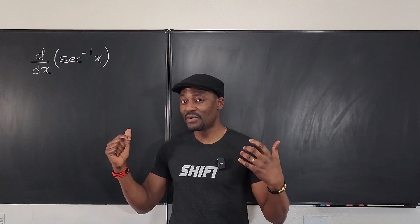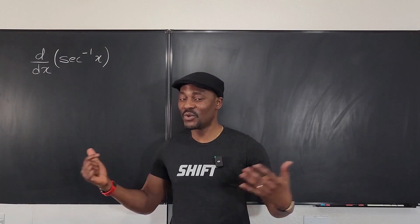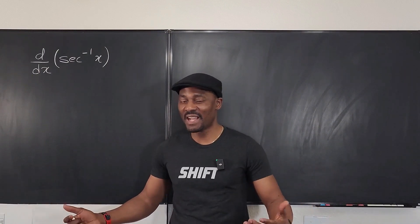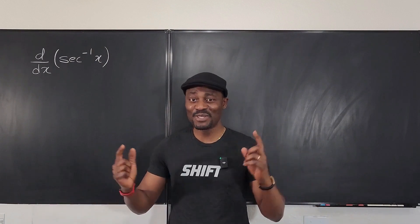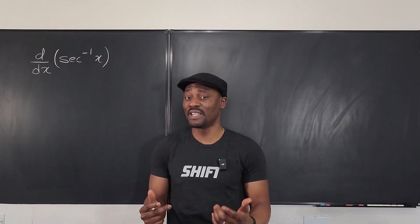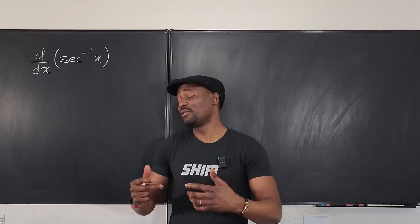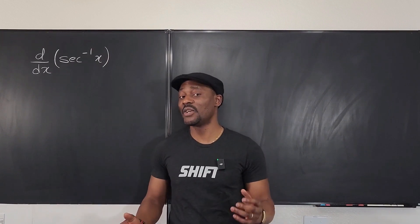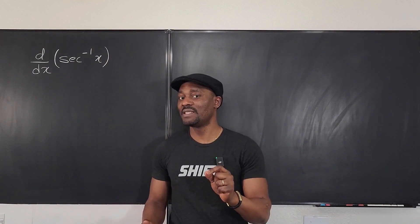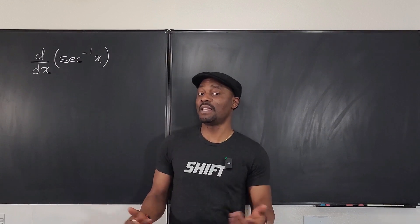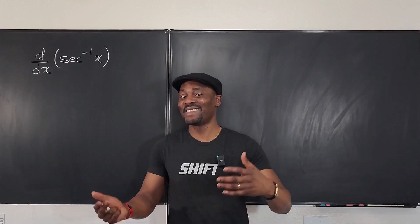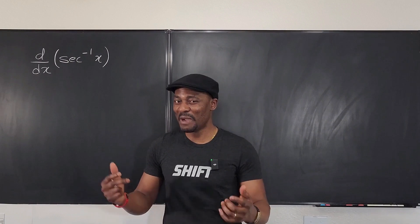The derivative of arc secant, or what we say inverse secant—I don't know how to do it directly, but it's something I know how to do. I know how to take the derivative of secant because the derivative of secant x is secant x tan x, so that might be a safe way to go.